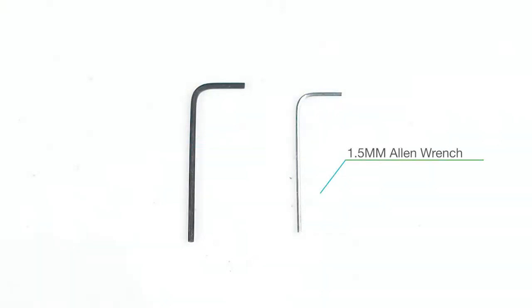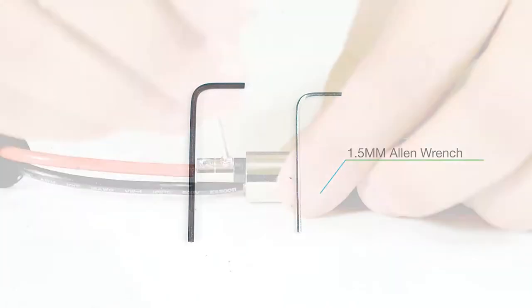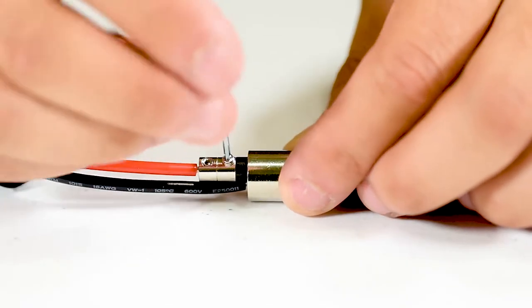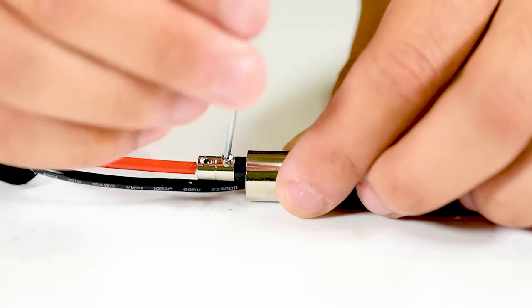Using the provided 1.5 millimeter Allen wrench, remove the M3 set screw from the coaxial connector assembly.